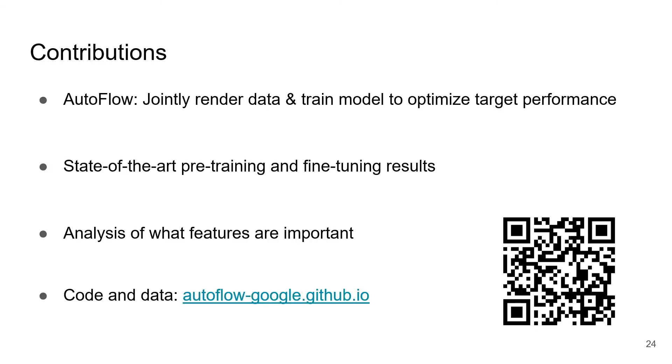In summary, we have made the following contributions. First, we have formulated learning to render training data as joint data rendering and model training to optimize the performance on a target dataset. Second, we have found that a simple 2D rendering pipeline can provide state-of-the-art pre-training and fine-tuning results. Third, through an ablation study, we have found what components are important, such as blur, fog, and non-rigid motion.